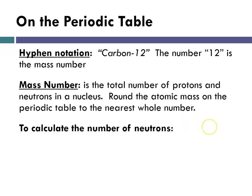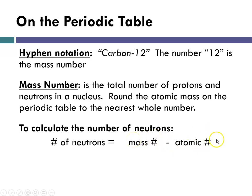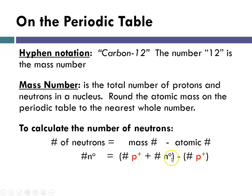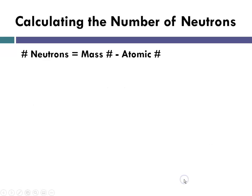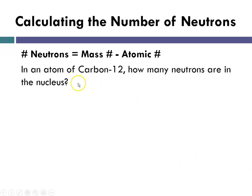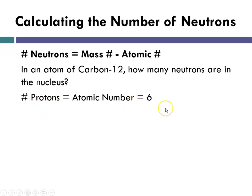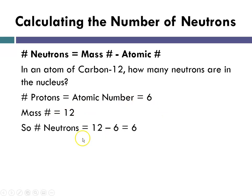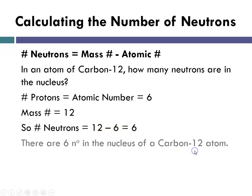To calculate the number of neutrons: the atomic number gives you the number of protons, and the mass number is the number of protons plus neutrons. So the number of neutrons equals the mass number minus the atomic number. For example, in an atom of carbon-12, the number of protons equals the atomic number, which is 6, and the mass number is 12. So the number of neutrons is 12 minus 6, which equals 6. There are 6 neutrons in the nucleus of carbon-12.